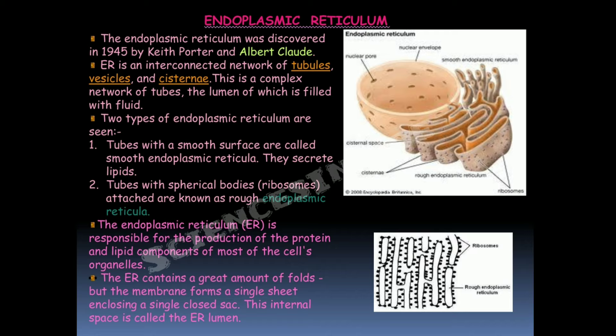The endoplasmic reticulum is responsible for the production of proteins and lipid components of most cell organelles. It contains a great amount of folds, but the membrane forms a single sheet enclosing a single closed sac. This internal space is called the endoplasmic reticulum lumen.